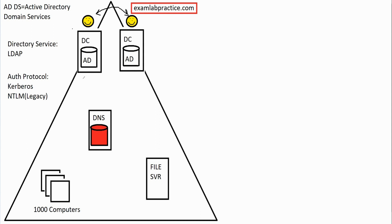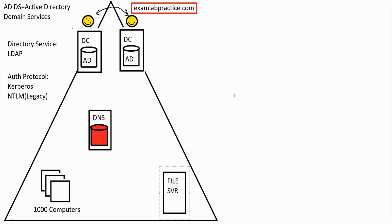All of this together — domain controllers, the Active Directory triangle — provides centralization. We moved away from peer-to-peer networking where every machine was its own boss, to a centralized environment. Domain controllers help us centralize, DNS helps us centralize, and we now have central control over things. One great feature of domain controllers is GPOs — Group Policy Objects.